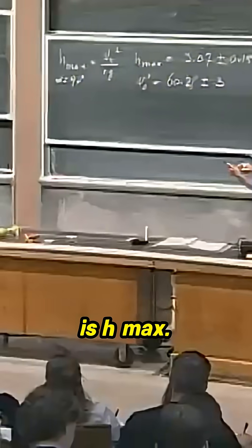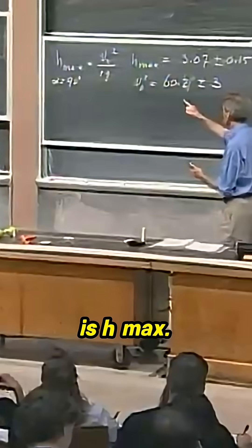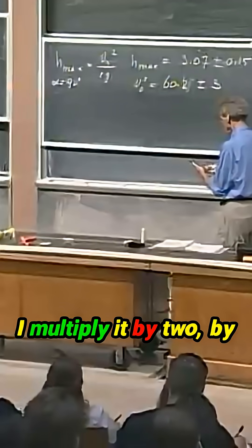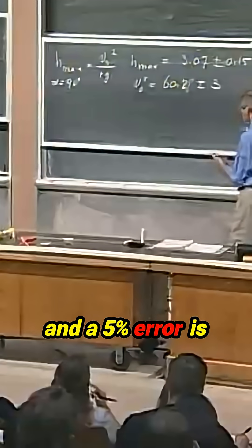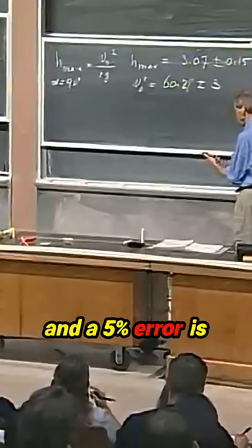3.07 is h max. I multiply it by two, by 9.8. There's 60.2, there's a five percent error, and a five percent error is indeed three.